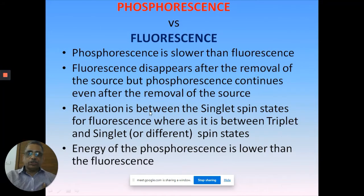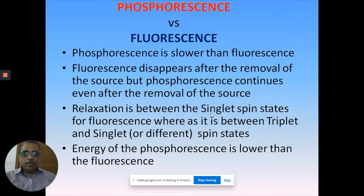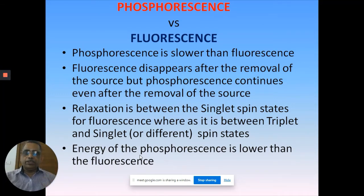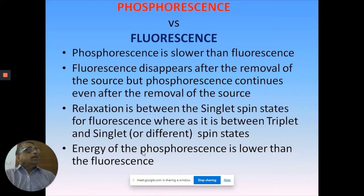If you look at the relaxation and spin states: relaxation in fluorescence is between the singlet spin states, whereas in phosphorescence it is between the triplet excited state and the ground singlet state. As long as you take organic chromophores, you will always end up with singlet-triplet. For inorganic chromophores you may have different spin multiplicity - that is why I carefully mentioned it as between two different spin states. The energy of phosphorescence is lower than fluorescence, since the energy gap between triplet and singlet is lower than between S1 and S0.